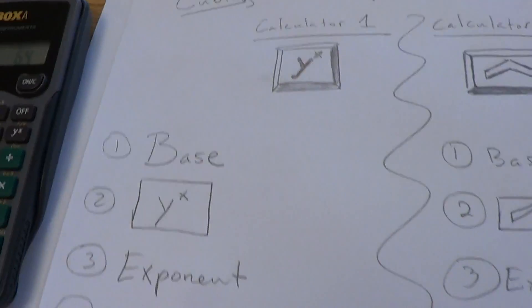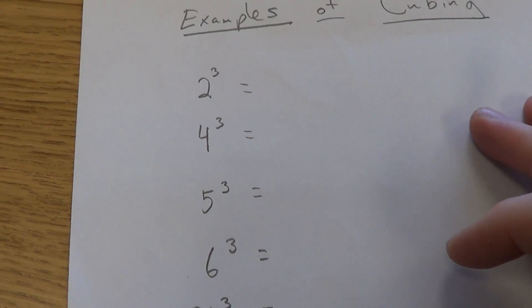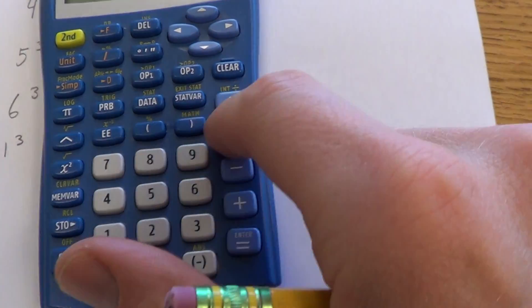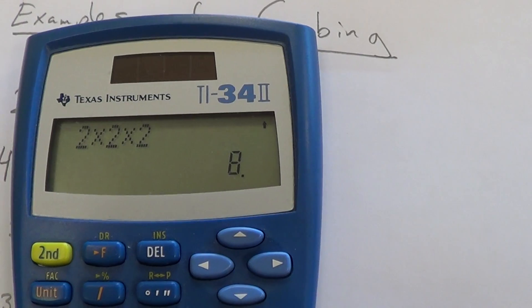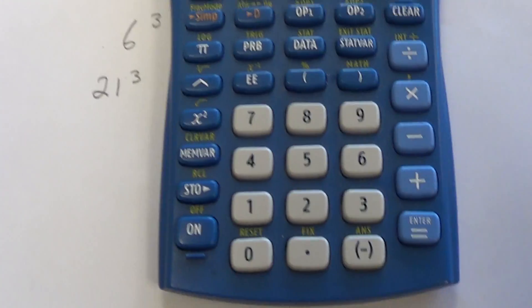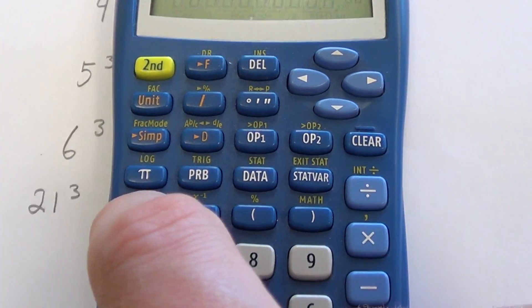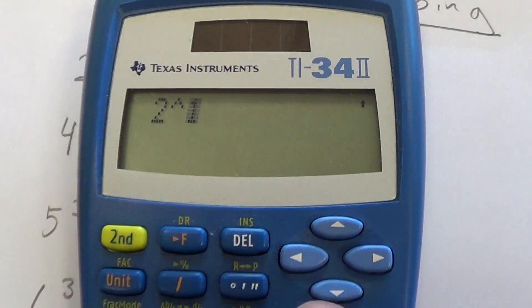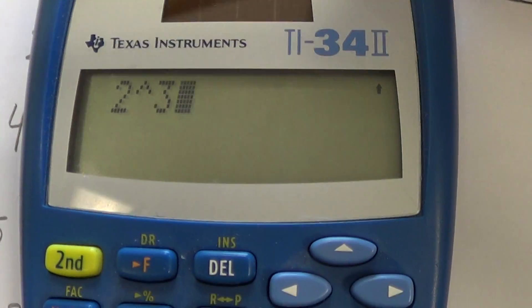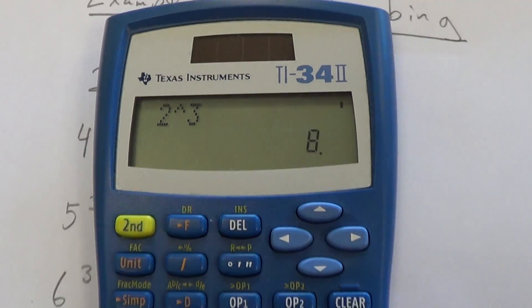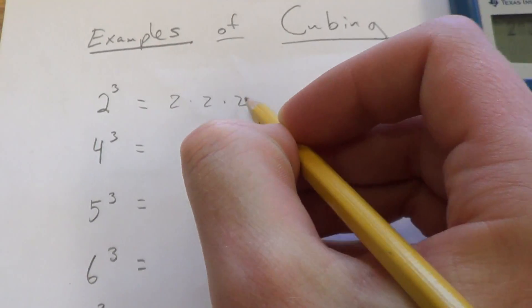Now I'll show you on the other calculator too. 2 cubed — we said it was 8, it's 2 times 2 times 2. I can do it by typing 2 times 2 times 2, or I can type the base, which is 2, then hit my exponent button — on this calculator that's the little house button — then type 3, because cubing means exponent 3, and hit equals to get 8. So 2 cubed, which is 2 times 2 times 2, is 8.